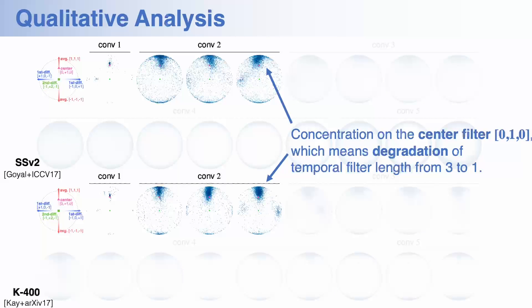First, at a shallower layer, the distribution is rather concentrated around the center filter, which means degradation of three-dimensional temporal filter into only one-dimensional filter, which indicates no temporal feature extraction. So we can guess that the shallower layers extract appearance features rather than temporal dynamics.